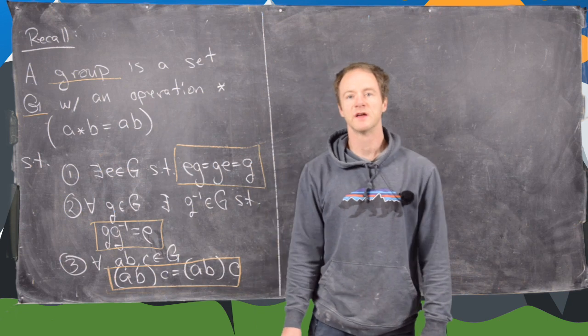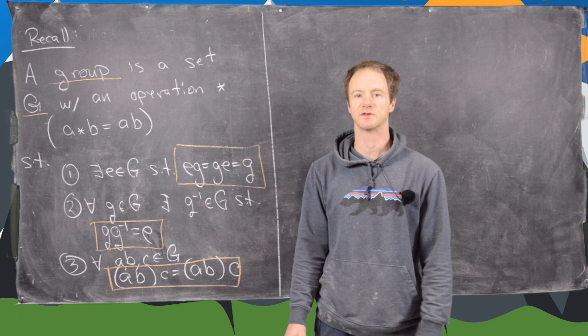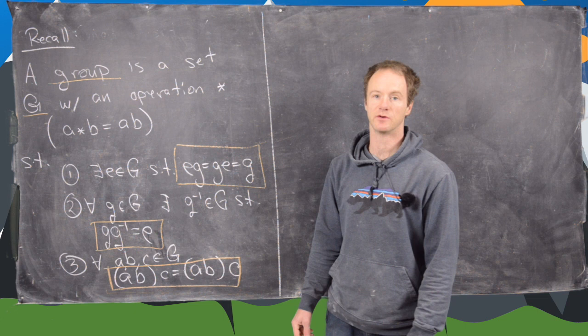Okay, so in previous videos we defined what a group is and we looked at some examples. We looked at the integers mod n, we looked at the dihedral groups, and we looked at the symmetric group. In other words, the permutation group on n letters.